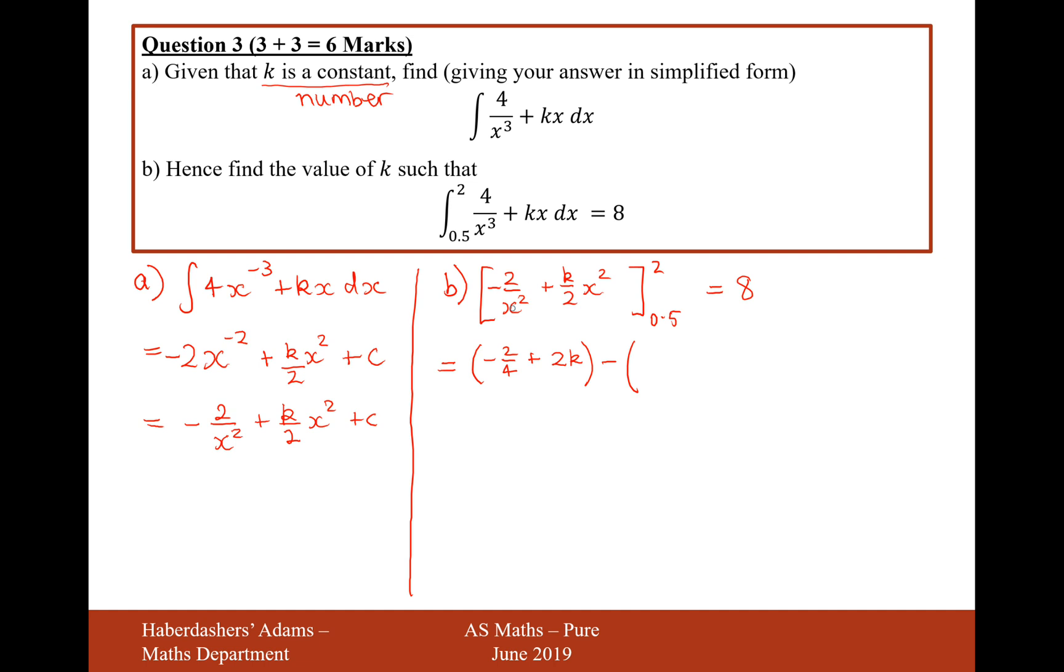So what's 2 to the power of 0.5? So it's 0.5 to the power of 2. That would be a quarter. But then 2 divided by a quarter will give it minus 8. And then it would be plus k over 2 times 0.5². 0.5² is a quarter. But then times it by another 2. That would be k over 8. And then that will equal 8.